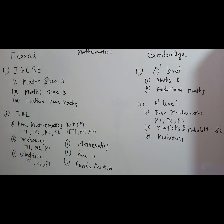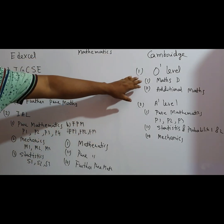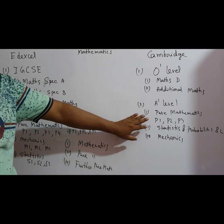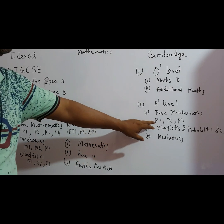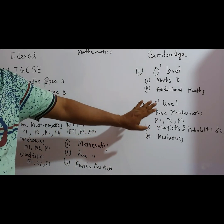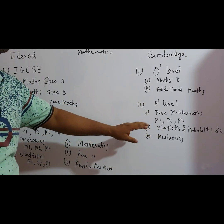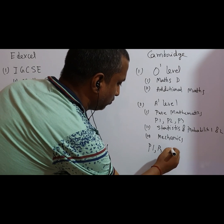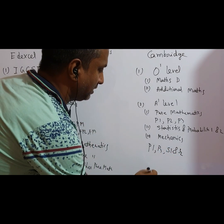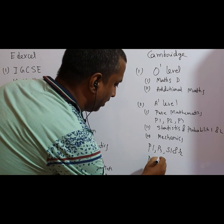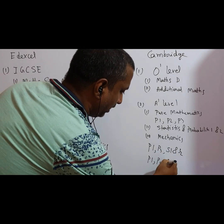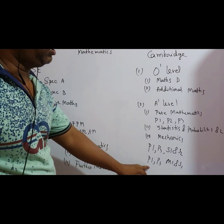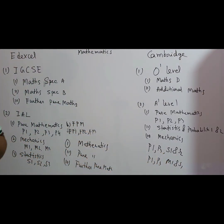Overall in ADEXCEL you need six papers, totalling 600 marks. In CAMBRIDGE O level, math D and additional maths are available. For A level, most students choose either pure mathematics and statistics, or pure mathematics, statistics, probability, and mechanics. Those taking pure mathematics and statistics take P1, P3, S1, and S2; those taking the mechanics option take P1, P3, M1, and S1 — four papers total in CAMBRIDGE versus six in ADEXCEL.